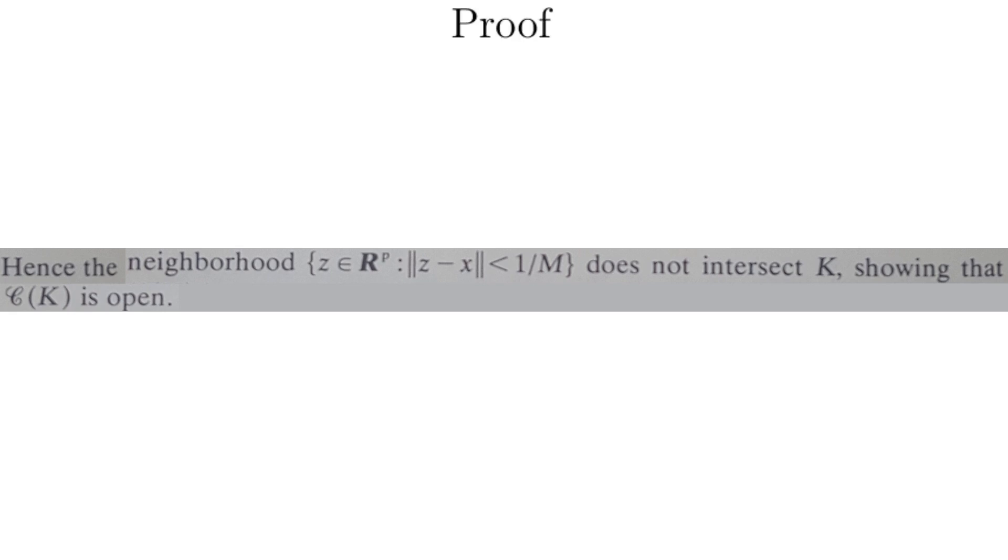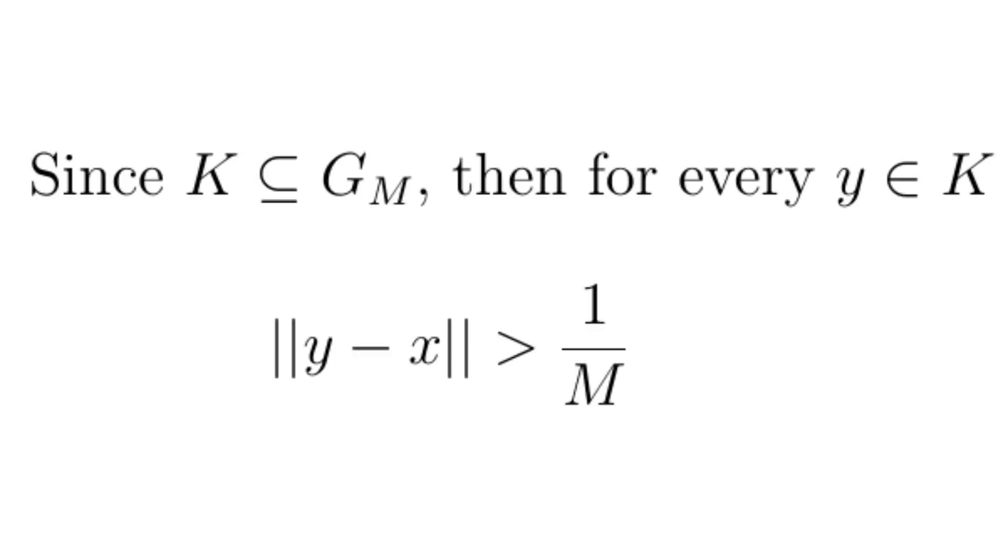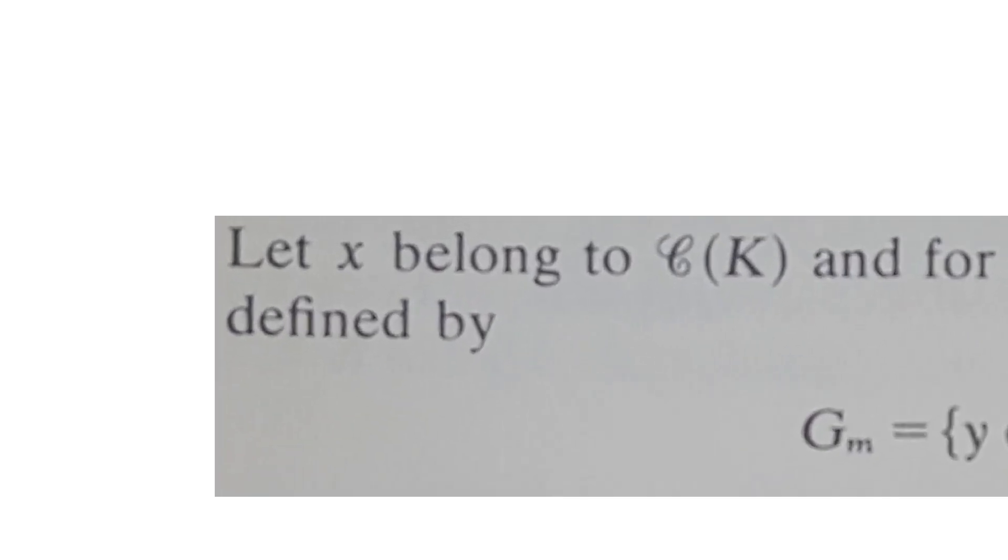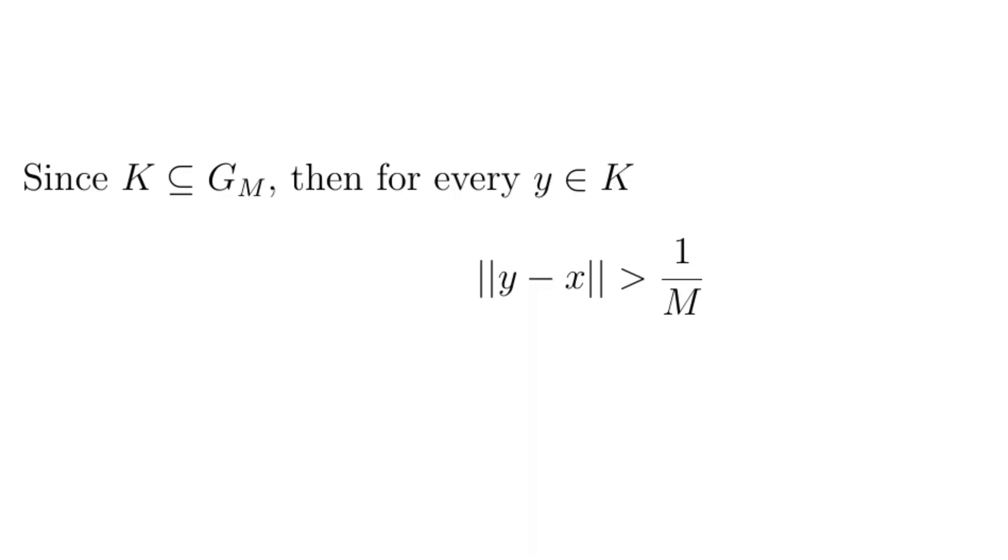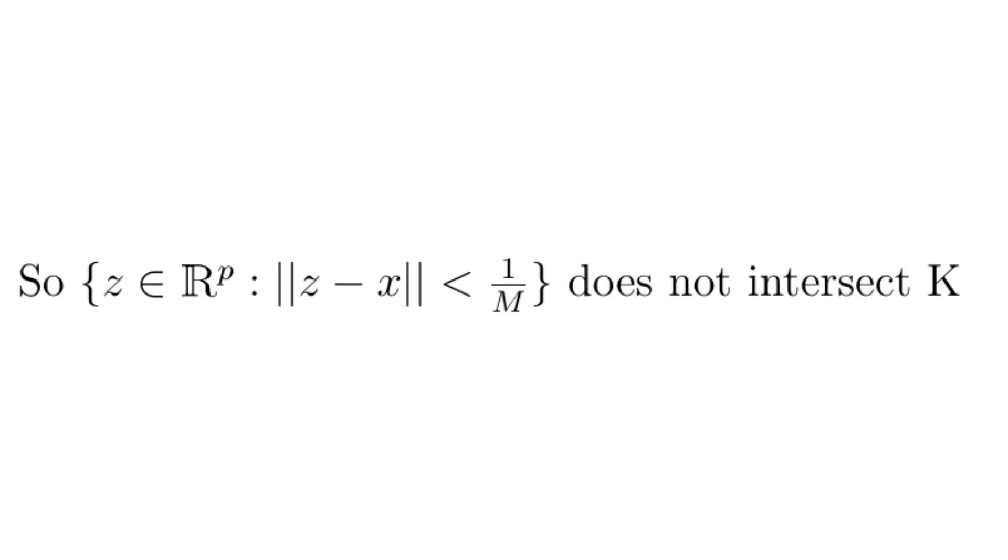Proof. Hence, the neighborhood, the set of all z in R^p such that the distance between z and x is less than 1 over M, does not intersect K, showing that the complement of K is open. Since K is a subset of G_M, then every point y in K has the property that the distance between y and x is greater than 1 over M. Remember that x is the point we chose way at the beginning, and x is in the complement of K. Since every point y in K has the property that the distance between y and x is greater than 1 over M, then every point z, where the distance between z and x is less than 1 over M, is not in K. So the set of all such points, the neighborhood of x, has no common points with K, so they do not intersect. And we've done it. We have found an open neighborhood of the point x that is entirely contained in the complement of K. This is one way to prove that a set is open, so the complement of K is open.